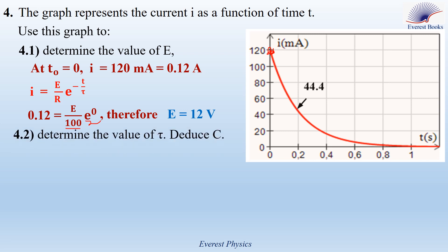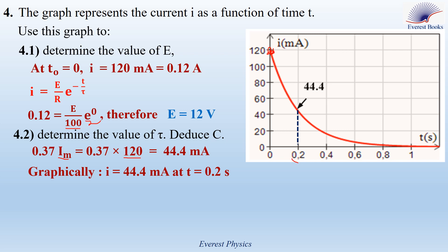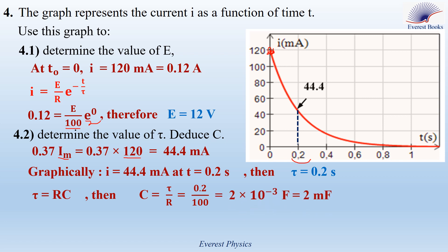Part 4: determine the value of tau and then deduce the value of C. We know that during charging, after a time tau, the current becomes 37% of its maximum value. So 0.37 times IM equals 0.37 times 120 milliamperes, where IM equals 120 milliamperes, giving 44.4 milliamperes. Using the graph, after a time of 0.2 seconds the current equals 44.4 milliamperes. So tau equals 0.2 seconds. Using tau equals R times C, then C equals tau over R, which equals 0.2 over 100, which equals 2 times 10 to the power minus 3 farads, equal to 2 millifarads.